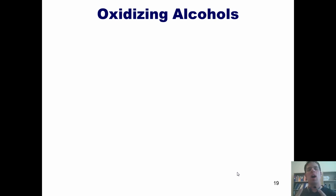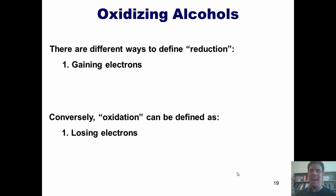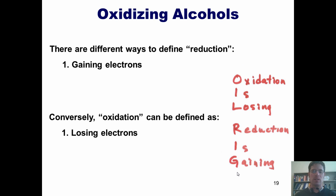We now come to another subject: oxidizing alcohols. As you might remember from general chemistry, reduction can be defined as gaining electrons, and oxidation can be defined as losing electrons. If a substance gains electrons going from left to right in an equation, it has been reduced; if it loses electrons, it has been oxidized. We can remember this with the mnemonic 'LEO the lion says GER' — Losing Electrons is Oxidation, Gaining Electrons is Reduction — or 'OIL RIG': Oxidation Is Losing, Reduction Is Gaining.